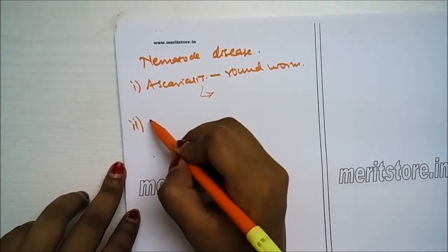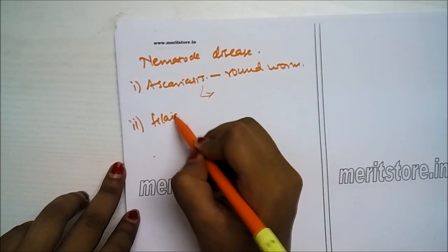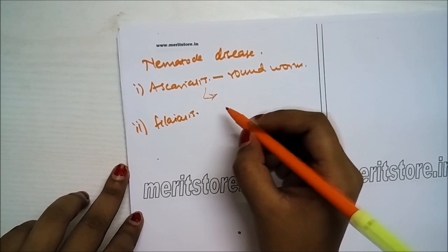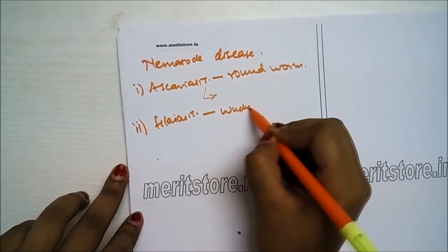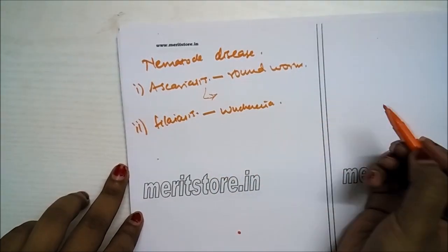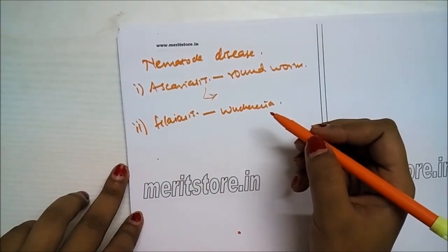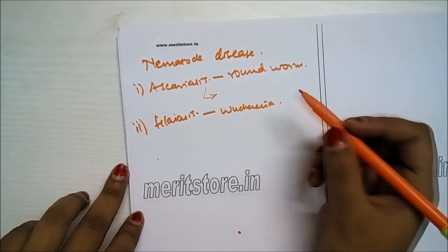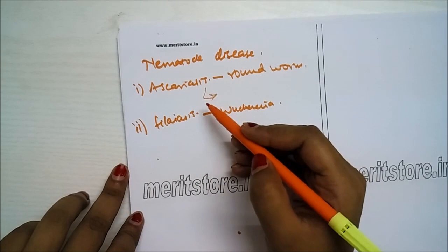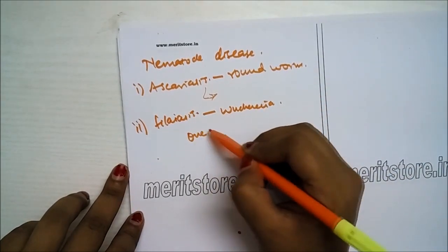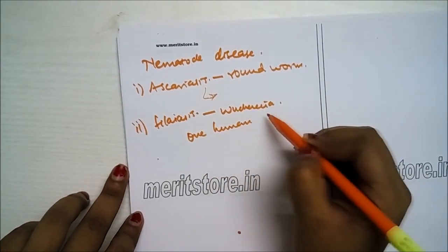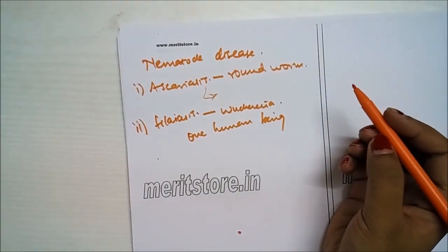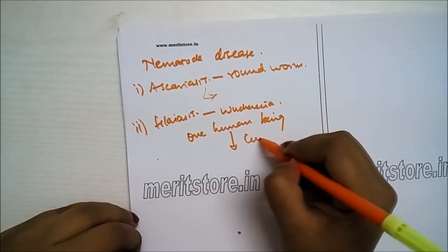Second nematode disease is filariasis, also known as elephantiasis. It is a helminthic disease caused by Wuchereria. The filarial worms cause slowly developing chronic inflammation of the organs in which they live for many years, usually the lymphatic vessels of the lower limbs. The pathogen spreads from one human being to another through mosquitoes like Culex and to a lesser extent by Anopheles.